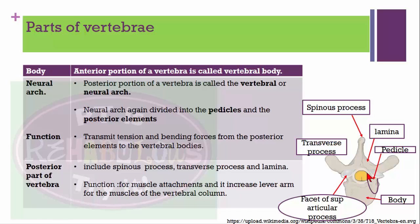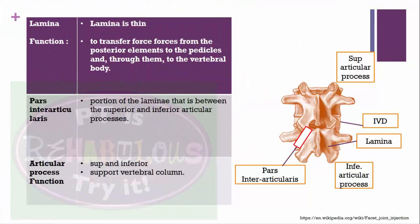The posterior part of vertebra includes spinous process, transverse process, and lamina. The main function of the posterior part is for muscle attachment and to increase the lever arm for muscles of the vertebral column. The lamina is a very thin structure whose main function is to transfer force from posterior elements to the pedicles and through them to the vertebral body.